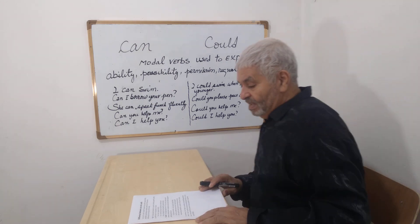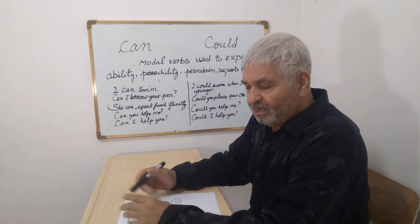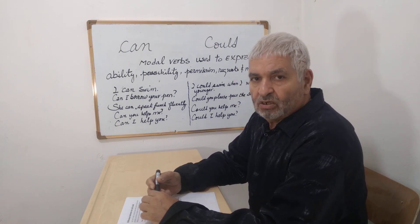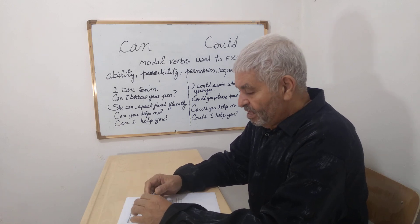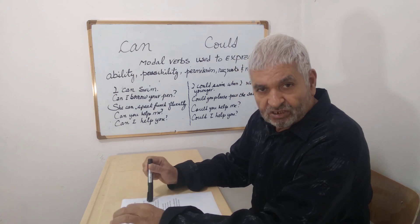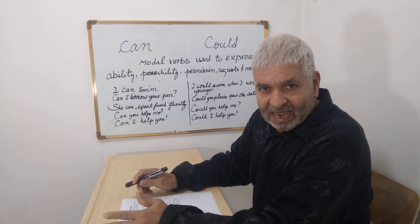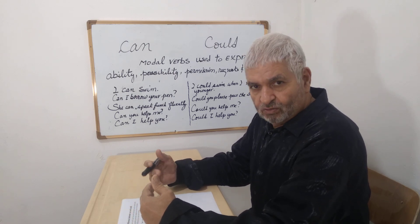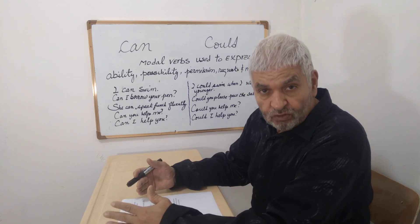Now, when to use 'can' and when to use 'could'? Very simple. When you use 'can', you use it for the present — 'I can swim', 'I can play'. That's something that you can do now, and you're still able to do it in the future.